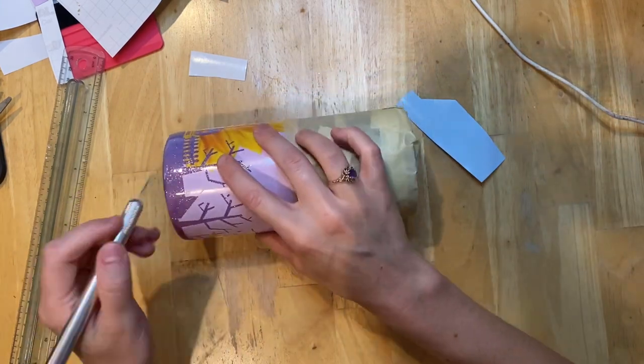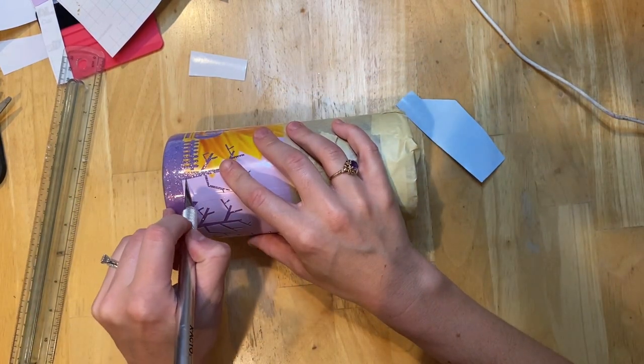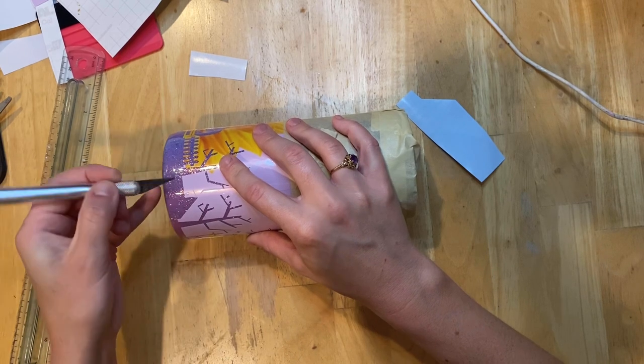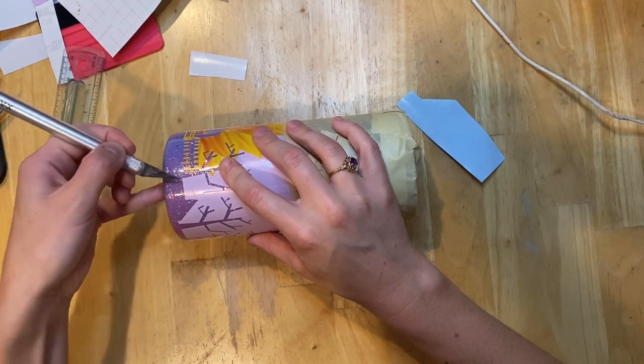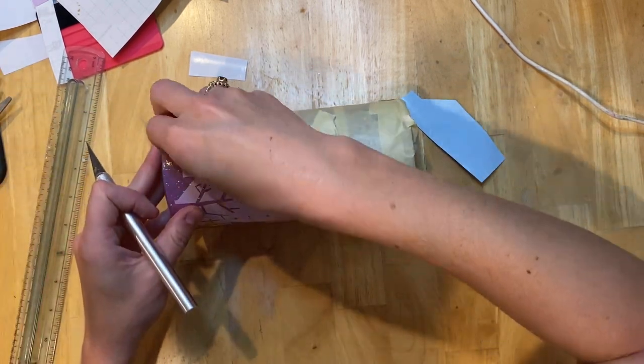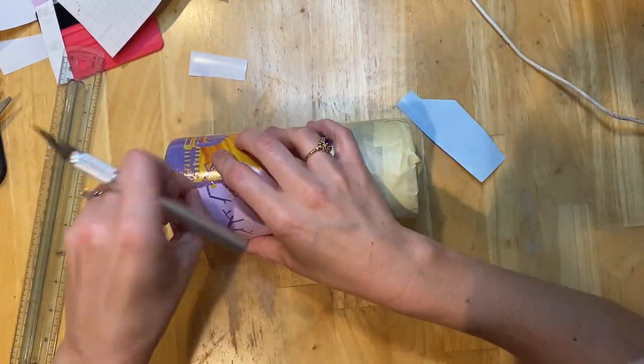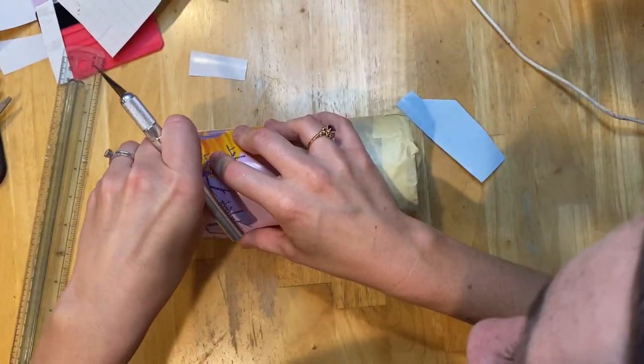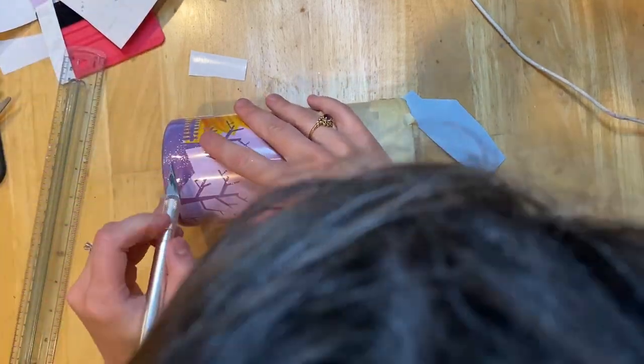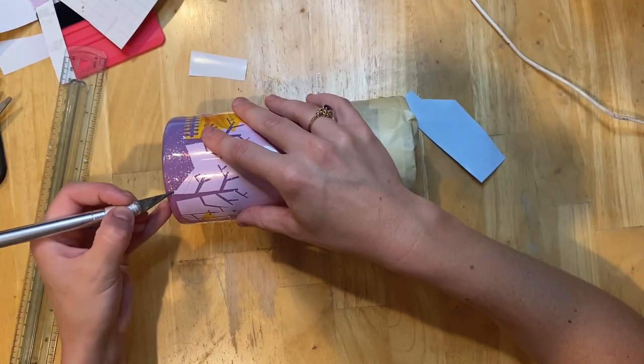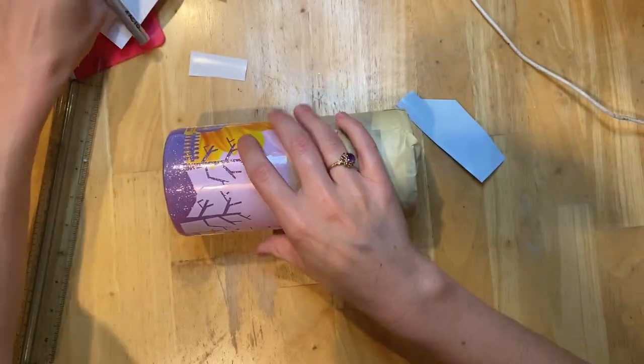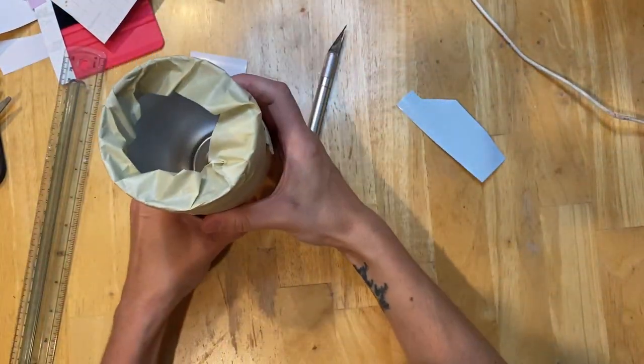I'm just using an exacto knife to trim those blunt edges. I'm just kind of going to make it look almost like a little hill just because I don't want to have weird, awkward edges on my template. I want it to flow naturally. I want it to look almost like it's seamless. So just use your exacto knife to trim, make a little mountain or a hill right there.